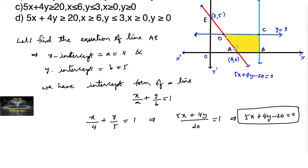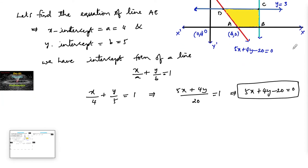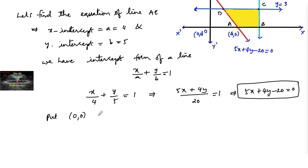To verify which half-plane the region is in, let's substitute the origin (0, 0) into the line equation. Putting in (0, 0): 5×0 + 4×0 - 20 gives us -20, which is less than 0. So our shaded region is away from the origin — it's on the other side of the half-plane.